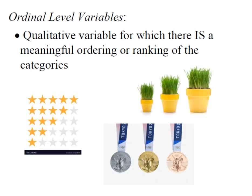When we get to ordinal level variables, they're still qualitative, but now there's a meaningful order or rank of the categories. For example, we have medals: gold, silver, and bronze — we know gold is better than silver, and silver is better than bronze. We also have small, medium, and large, or a five-star rating system. These are still simply categories, but there is an order or rank that makes sense.